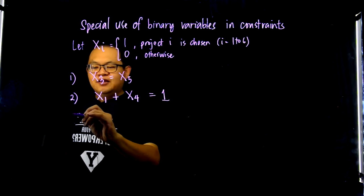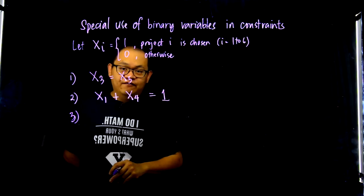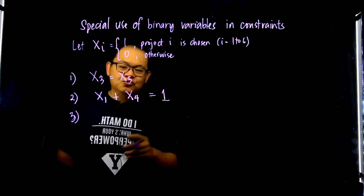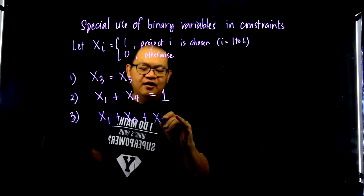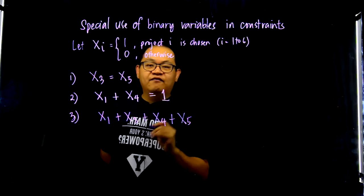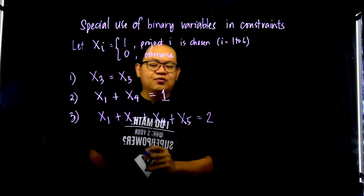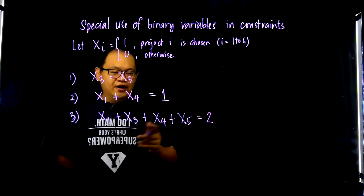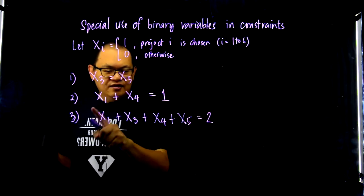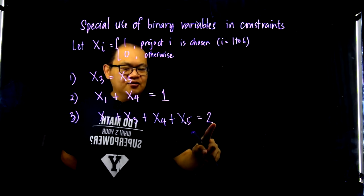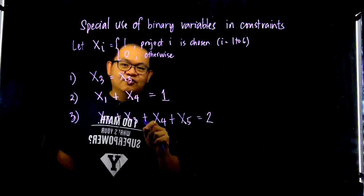For example number 3, let's say you have projects 1, 3, 4, and 5, and you have to choose two of them. So you have x1, x3, x4, and x5, and you want two of them to be chosen. In this case, all you have to do is equate the sum to be equal to 2. Because each of these variables are binary, by equating the sum to 2, you are saying only two of the four variables can be equal to 1, and the rest would have to be 0.